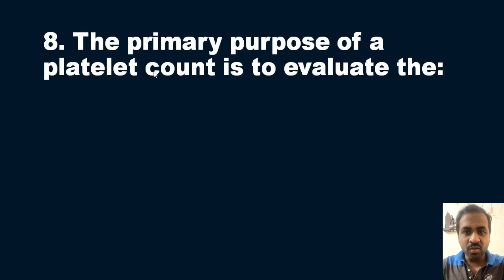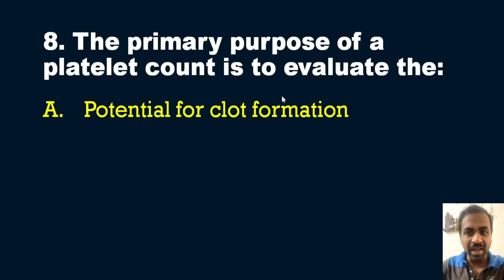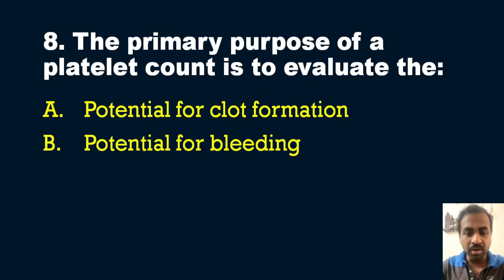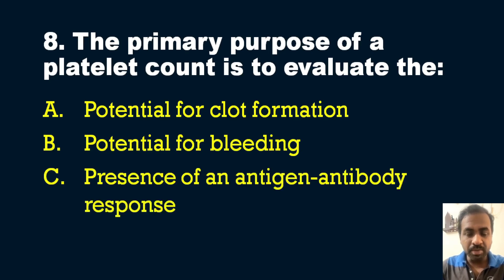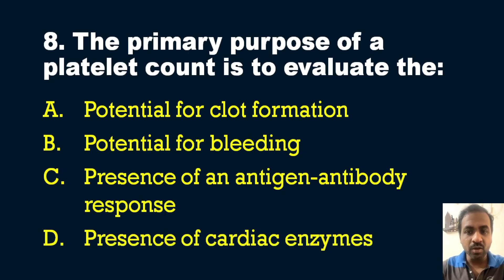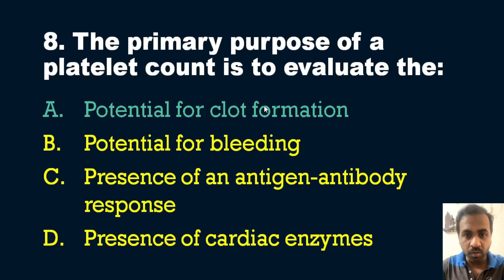Question eight: What is the primary purpose of a platelet count? Options: A) Potential for clot formation, B) Potential for bleeding, C) Presence of an antigen-antibody response, D) Presence of cardiac enzymes. The answer is option A — potential for clot formation. Platelets are disc-shaped cells essential for blood coagulation. A platelet count determines the number of thrombocytes in the blood available for promoting hemostasis and assisting with blood coagulation after injury.